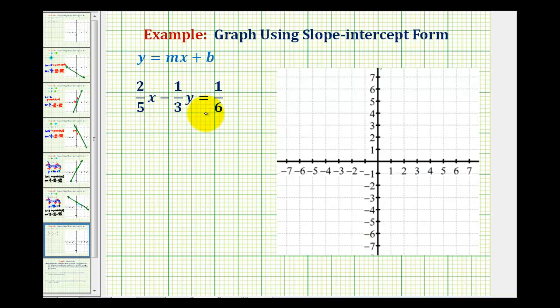We want to graph the given linear equation using the slope intercept form of a line, which is the form y equals mx plus b. If we have a linear equation in this form, then b will be the y-intercept and m will be the slope.